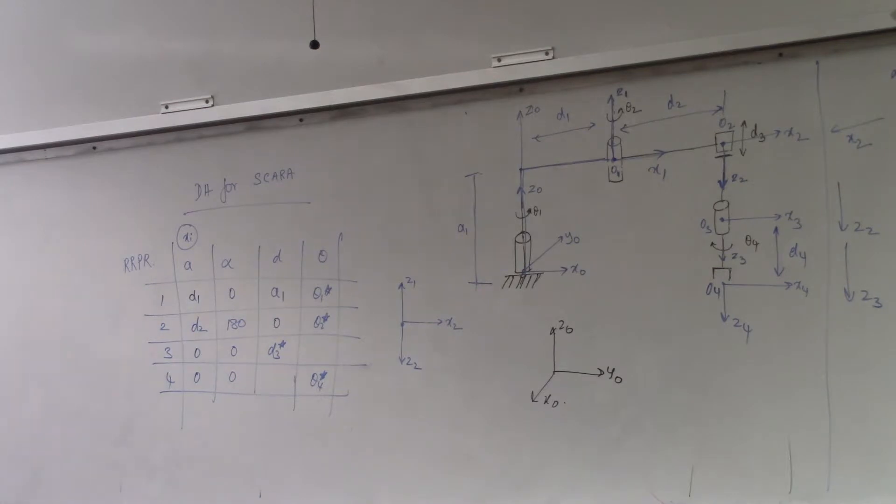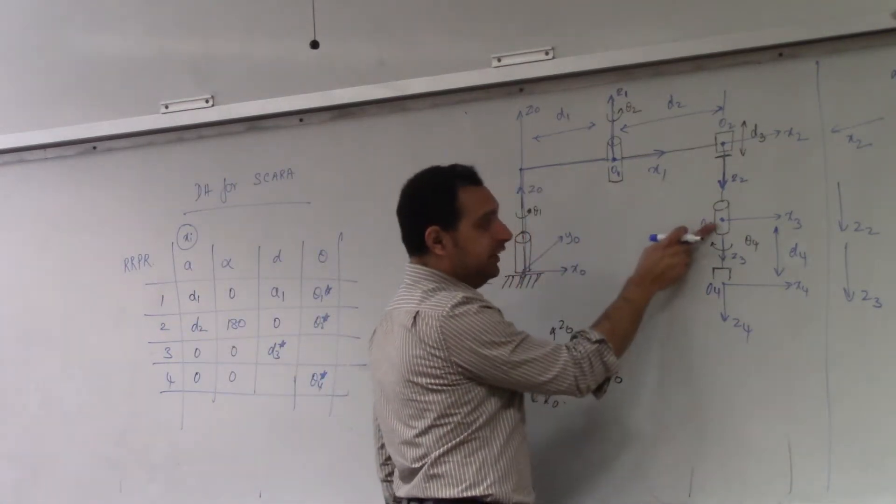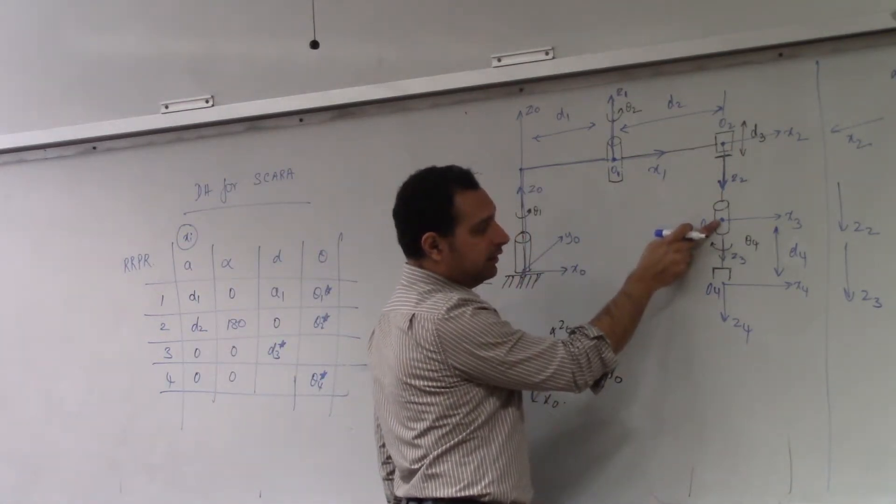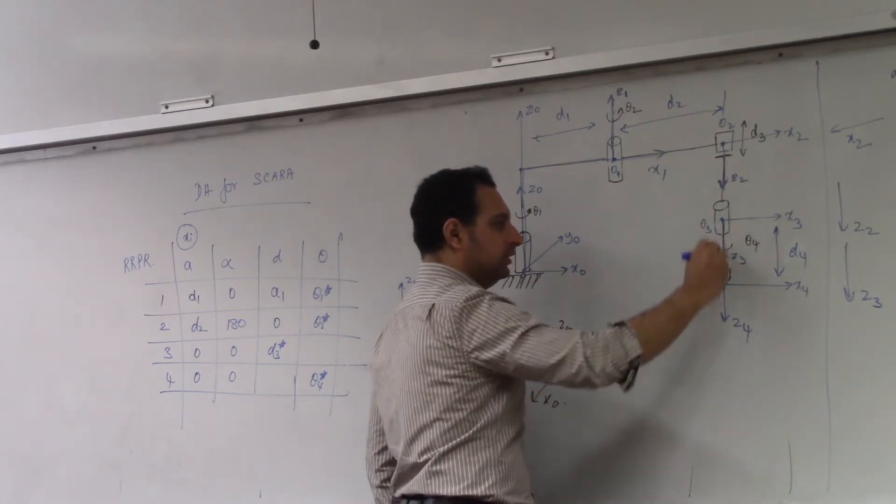How about D4? So D4 is measured along Z3, right? Till it intersects with the next X axis. So this is this distance, D4.